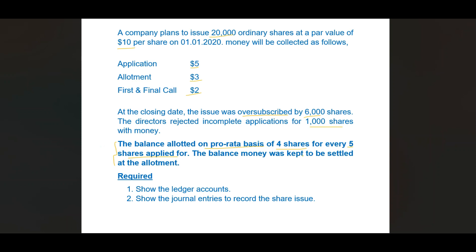The balance money was kept to be settled at the allotment. You are required to show the ledger accounts and the journal entries. Now let's move on to the question.